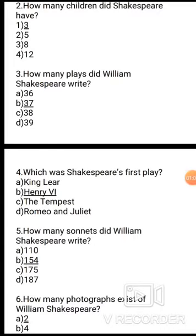Question 5: How many sonnets did William Shakespeare write? Options: A. 110, B. 154, C. 175, D. 187. The correct answer is option B, 154.